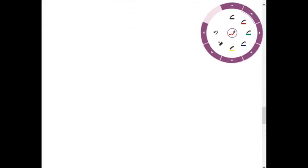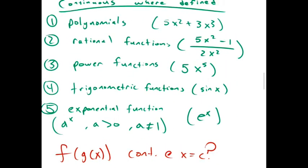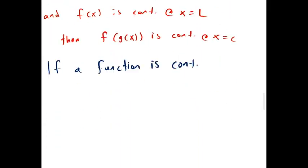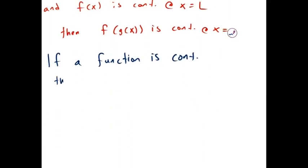And why do we care if something's continuous? If something is continuous, so if we know it's continuous at a point, let's say it's one of these kind of functions and we know it's defined, so if the limit can be found by plugging it.